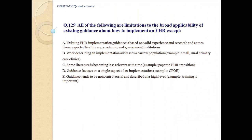Question number 129: All of the following are limitations to the broad applicability of existing guidance about how to implement an EHR except — A. existing EHR implementation guidance is based on valid experience and research and comes from respected healthcare, academic and government institutions. B. work describing an implementation addresses a narrow population, for example small rural primary care clinics. C. some literature is becoming less relevant with time, for example paper-to-EHR transition. D. guidance focuses on a single aspect of an implementation, for example CPOE. E. guidance tends to be non-controversial and described at a high level, for example 'training is important.'